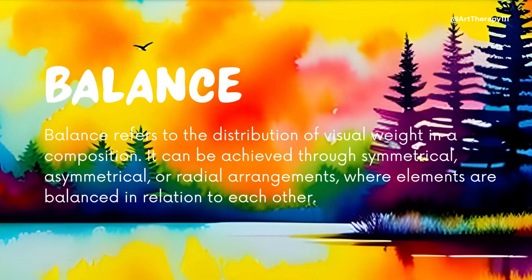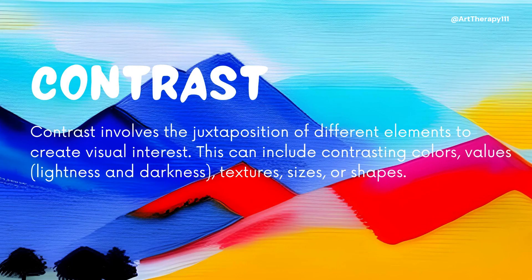Balance refers to the distribution of visual weight in a composition. It can be achieved through symmetrical, asymmetrical, or radial arrangements, where elements are balanced in relation to each other. Contrast involves the juxtaposition of different elements to create visual interest. This can include contrasting colors, values, lightness and darkness, textures, sizes, or shapes.